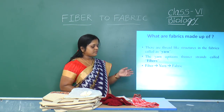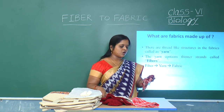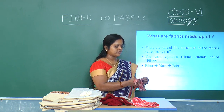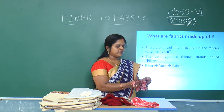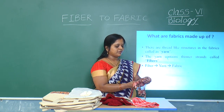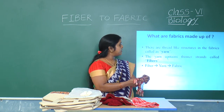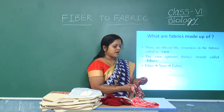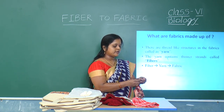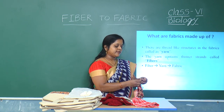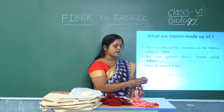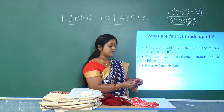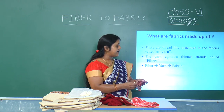What are fabrics made up of? When you take a cloth and stretch it, you can see some fibers coming out. The threads which are present in the fabrics are called yarn. If you stretch one end of the yarn again, you can see thin strands. These consist of much thinner strands, and these thinner strands are called fibers. So every fabric is made of yarn, and every yarn has fibers.